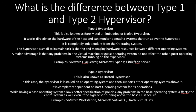What is the difference between Type 1 and Type 2 hypervisors? Type 1 hypervisor, also known as bare-metal, embedded, or native hypervisor, works directly on the hardware of a host and can monitor operating systems that run above the hypervisor. It is completely independent from the operating system. The hypervisor is small as its main task is sharing and managing hardware resources between different operating systems. A major advantage is that any problem in one virtual machine or guest OS does not affect other guest operating systems. Examples: VMware ESXi, Microsoft Hyper-V, and Citrix XenServer.